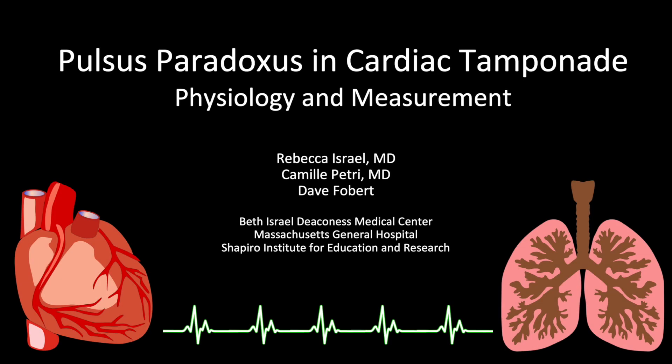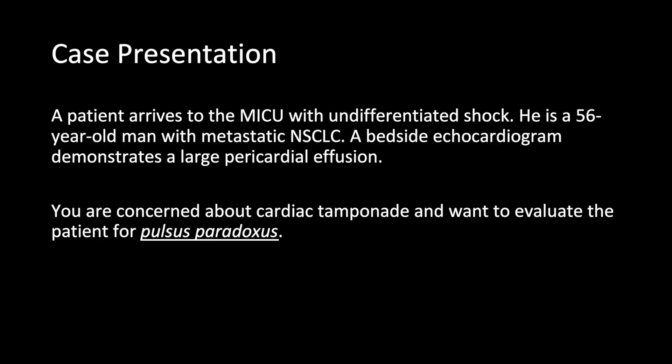This is Rebecca and Camille, and in this video we will discuss the physiology of pulsus paradoxus with a focus on cardiac tamponade. We're going to start with a case. A patient arrives to the MICU with undifferentiated shock. He is a 56-year-old man with metastatic non-small cell lung carcinoma. A bedside echocardiogram demonstrates a large pericardial effusion.